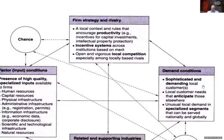Demand conditions are directly opposing factor conditions on the diamond. This refers to the sophisticated local customer — think of the Japanese camera buyer — who wants ever-increasing, innovative properties in a good or service. That local customer need anticipates the needs in other markets. If a firm can satisfy that sophisticated local customer, it can spread those innovations to the rest of the world, serving a global market.